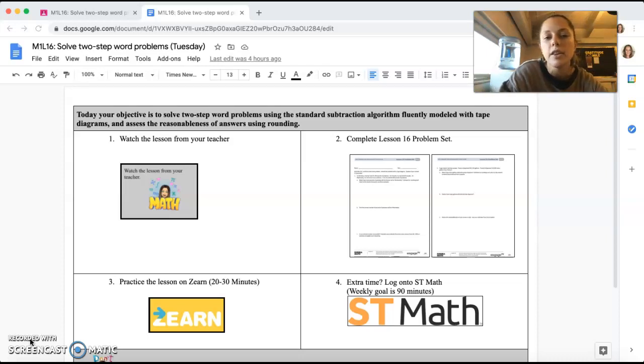This is basically saying that you're solving two-step word problems, so you know there's going to be more than one step. We're using subtraction just like we did yesterday, so you should have a subtraction equation. You should model with a tape diagram and we're using rounding to make sure our answers make sense. Let's get started.